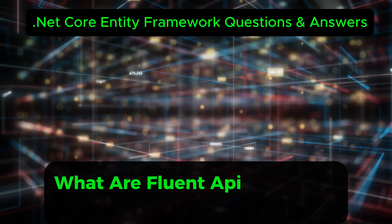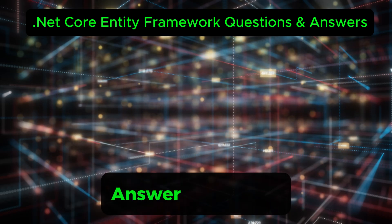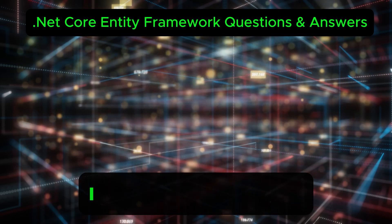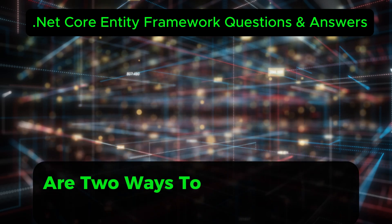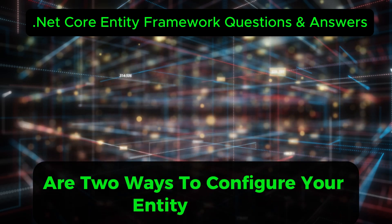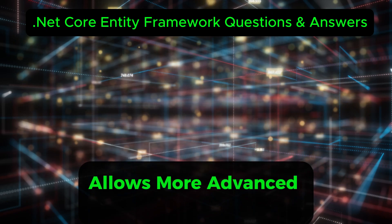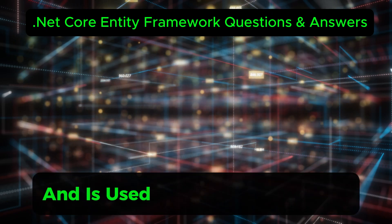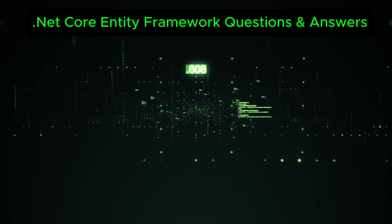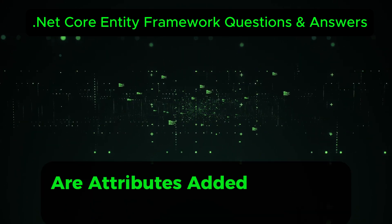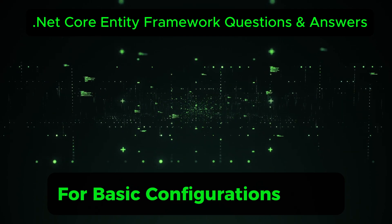What are Fluent API and data annotations in EF Core? Fluent API and data annotations are two ways to configure your entity classes. Fluent API allows more advanced configurations and is used in OnModelCreating in DbContext. Data annotations are attributes added to entity classes for basic configurations.